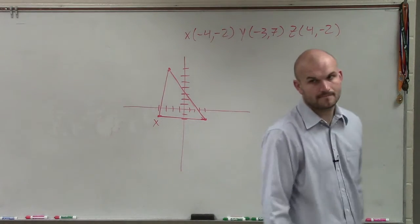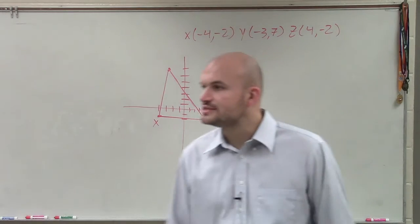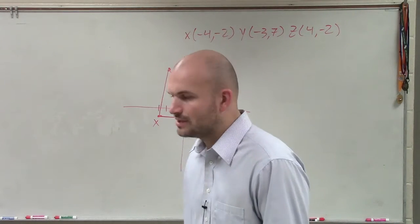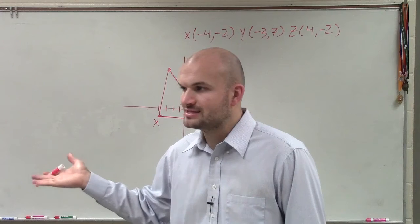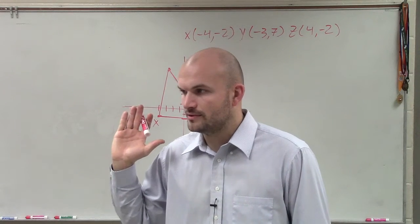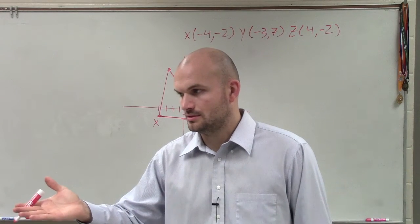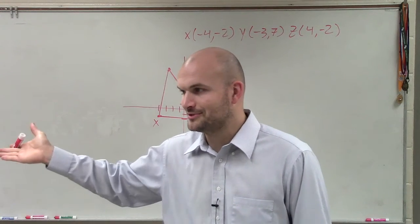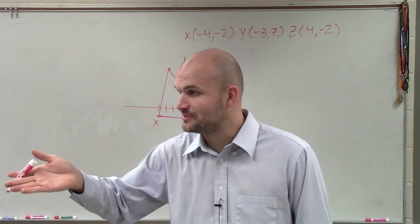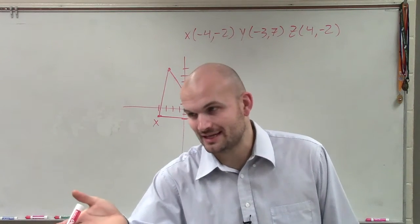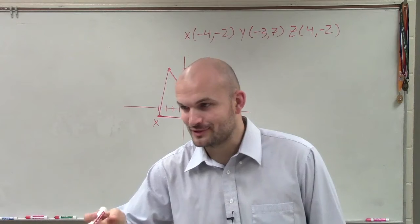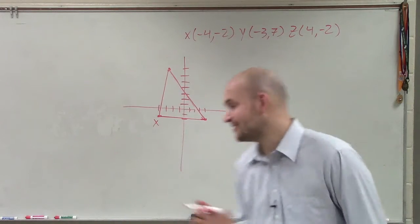Does everybody see that? So now what we need to do is determine if it's equilateral. That means, Taylor, how many sides are equal? Three. Mario, if it's isosceles, how many sides are equal? Two. Equilateral is all three. Isosceles is two. And Angel, if it's scalene, how many sides are equal? None. Yes, it's just zero, right?